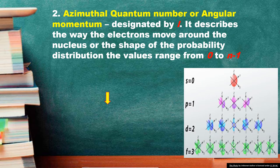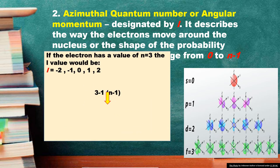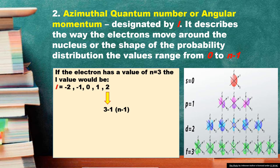The next quantum number is the angular momentum, also known as the azimuthal quantum number, designated by letter L. It describes the way electrons move around the nucleus, or the shape of the probability distribution. The values range from 0 to N minus 1. If the electron has a value of N equal to 3, meaning it is in the third energy level, the L values would be 0, 1, and 2 — since N minus 1 equals 2 — referring to the third energy level.